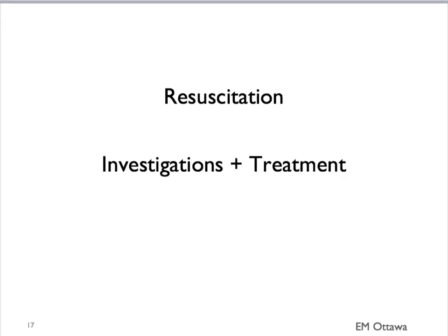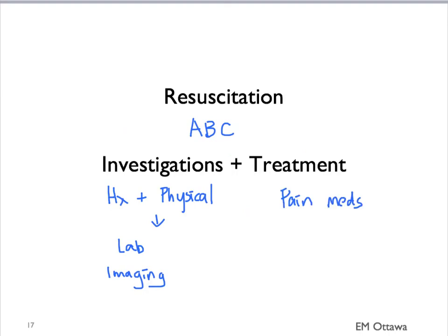In summary, we discussed how to put it all together in approaching the patient with abdominal pain. We will start with resuscitation, ensuring the patient's ABCs are fine. Then we will start a parallel approach of investigation and treatment. Based on your history and physical, you choose the most appropriate lab work and imaging modality. At the same time, treatment should be given to control the patient's pain and discomfort, and antibiotics if we're worried about an infectious process. Expedite the patient's surgical care by involving consultants early, particularly in the unstable patient. For specific treatment, I refer you to the other videos in this series. Thank you for watching.